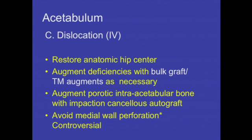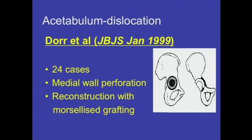In Crow type 4, you need to restore the anatomic hip center. You can augment deficiencies with bulk graft or trabecular metal augments, which are available but expensive. Augment the porous infra-acetabular bone with impaction cancellous bone grafting, taking graft from the head, and avoid medial wall perforation. There is a paper by Larry Dorr et al. describing 24 cases where the medial wall was deliberately breached, morselized graft placed, and the cup inserted — though many surgeons do not prefer this technique of breaching the medial wall to medialize the center of rotation.